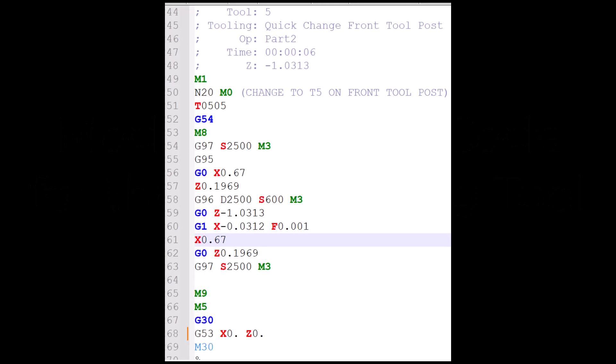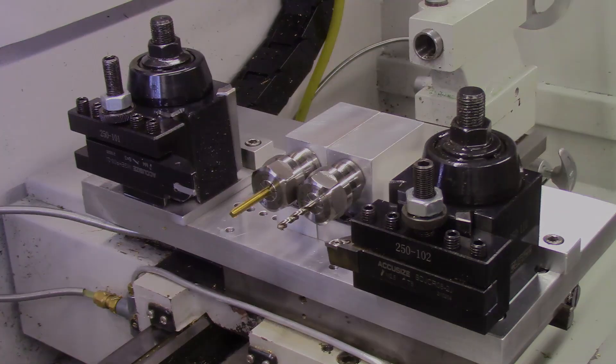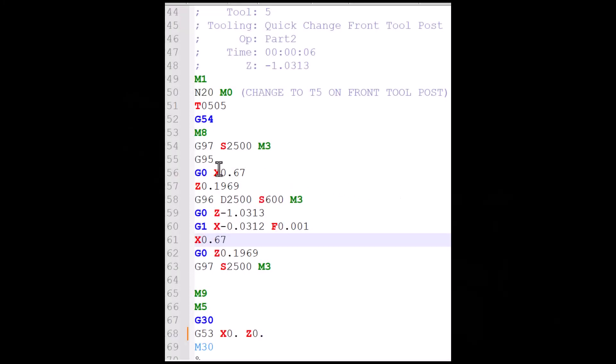The next problem was the parting off operation. The Fusion software provided for the parting off using the front tool post. However, I am using a gang tooling setup and the parting tool needs to operate from the rear tool post. So I needed to modify the starting and ending X dimension positions for the cutoff operation.